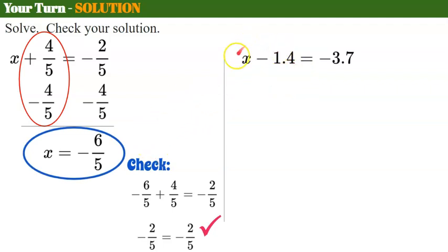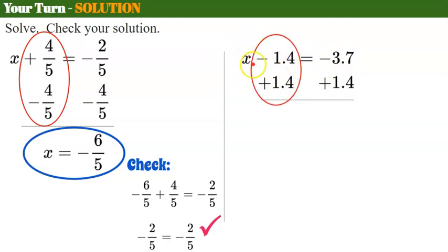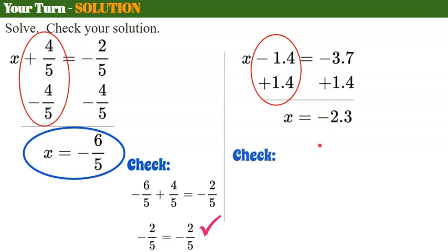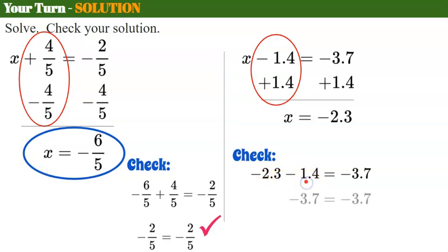For x subtract 1.4 equals negative 3.7: the inverse of subtract 1.4 is to add 1.4. I add 1.4 to both sides, creating my zero pair and leaving just x. Negative 3.7 and positive 1.4 have different signs, so I subtract the smaller absolute value from the larger: 3.7 minus 1.4 is 2.3, taking the sign of the larger — so x equals negative 2.3. Check: negative 2.3 subtract 1.4, add the opposite — 2.3 plus 1.4 is 3.7, keeping the negative sign gives negative 3.7. It checks; solution is x equals negative 2.3.